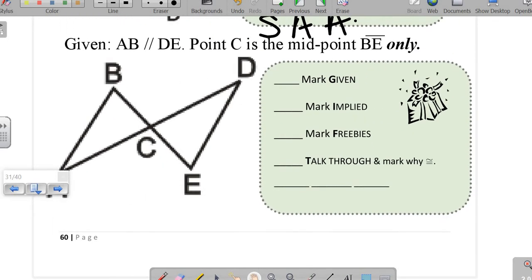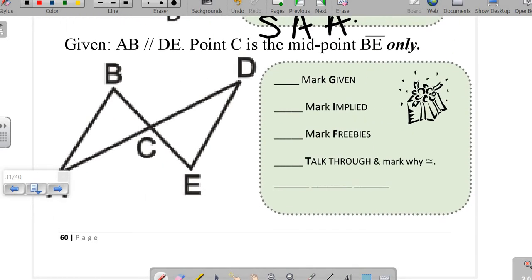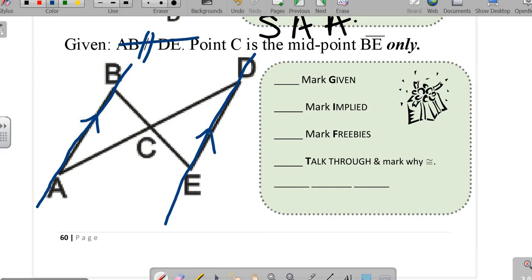Ready? Given: AB and DE are parallel. So I'm going to stretch it out, stretch it out, parallel. Point C is the midpoint of BE only.